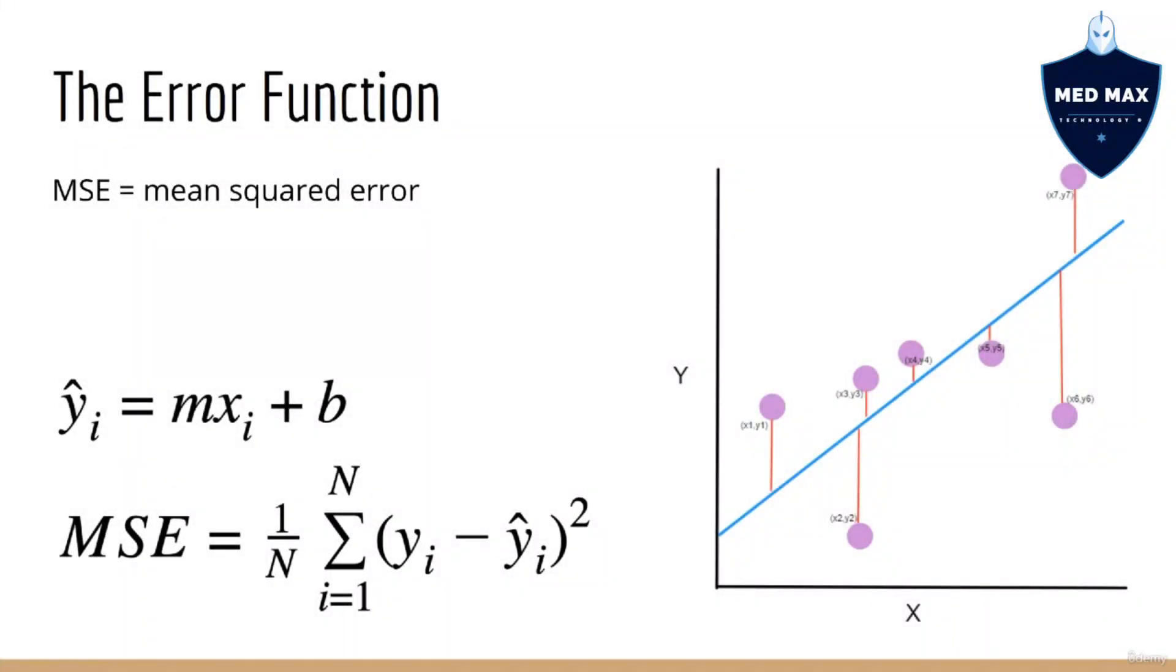The idea is, we're going to define an error function. For each data point, which is a pair made up of the input xi and the target yi, we are going to calculate a prediction, y hat i equals m xi plus b. Then we are going to take the square difference between yi and y hat i. We're going to do this for each of our data points for i equals 1 up to m. Once we've done this, we can add them all up and divide by m. This is called the mean squared error.